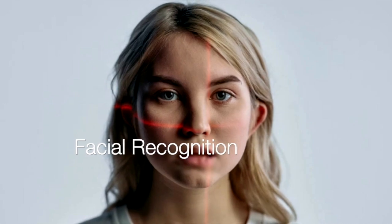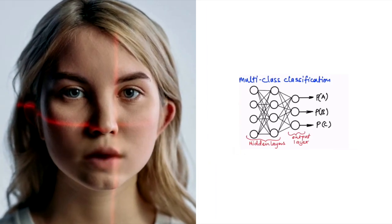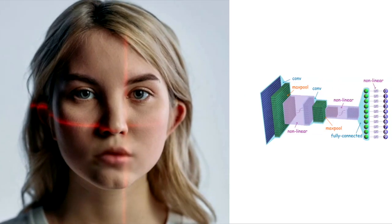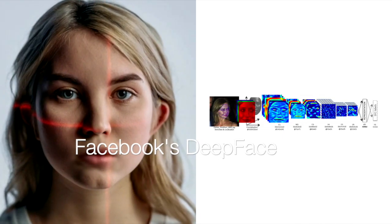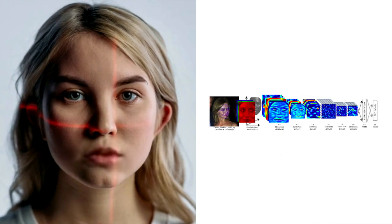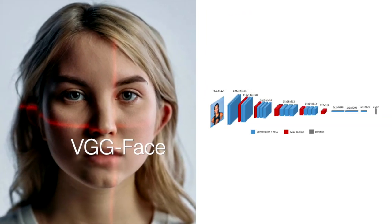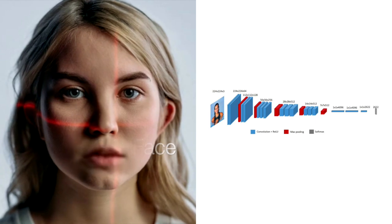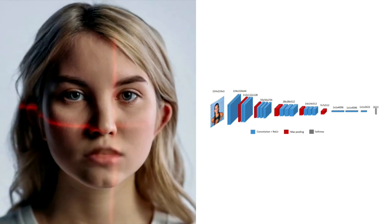In the realm of facial recognition, a notable technique involves constructing a regular classification model using CNN specifically trained on a fixed set of identities. What makes these models particularly powerful is their ability to extract meaningful vector embeddings from the intermediate layers. For instance, renowned models like VGG-FACE leverage the outputs of the layer preceding the final classification layer, comprising thousands of nodes that capture essential facial features.